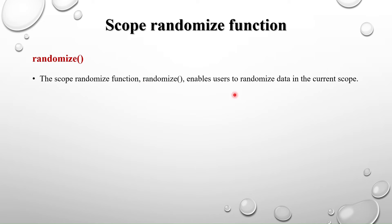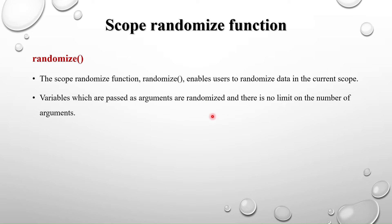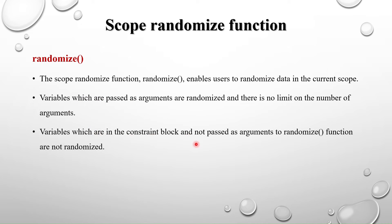Next, we have the scope randomize function. This allows us to randomize values present in a particular scope. The randomize function returns either 1 if randomization is successful, or 0 otherwise. The scope randomize function enables users to randomize data in the current scope — including data present in a module. Variables passed as arguments in the parentheses are randomized, and there is no limit on the number of arguments.